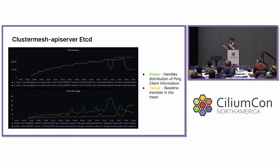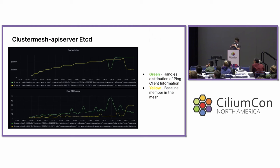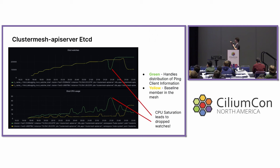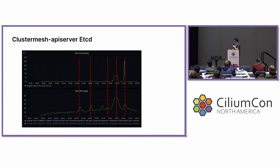Trying to figure out what was going on, we traced it back to the Cluster Mesh API server etcd. These two graphs show the resource usage of etcd: the bottom graph shows CPU and the top graph shows the watches for etcd over time. The green line shows the Cluster Mesh API server running alongside the ping client, responsible for propagating the Selium identity and Selium endpoint of that ping client to the other cluster. The yellow line represents the Cluster Mesh API server in a baseline cluster without additional load. At around where we see the benchmark dropping, we get to around 50 cores of CPU usage on etcd in that loaded Cluster Mesh API server, and at the same time the number of watches on etcd drops by half. We're assuming that CPU saturation led to these dropped watches, and one of those watches was critical for our benchmark causing it to fail. Correlating the CPU usage to our heuristic, those line up pretty well.